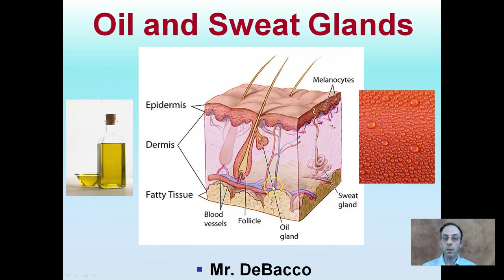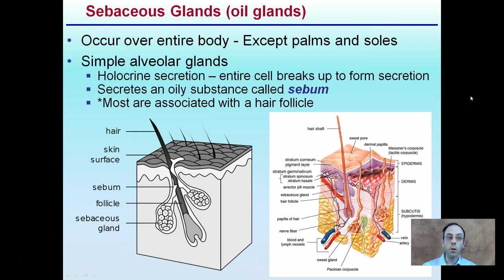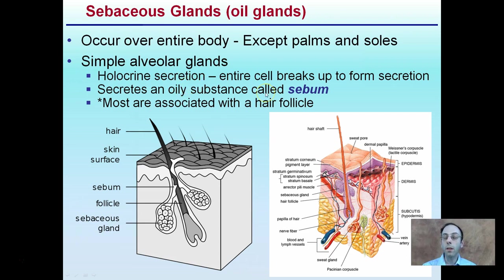Most of these glands are going to be located in the dermal region of the skin. Starting with our sebaceous glands, or oil glands, they occur over the entire body except the palms and soles. They are simple alveolar glands, and their holocrine secretions involve the entire cell breaking up to form the secretion.